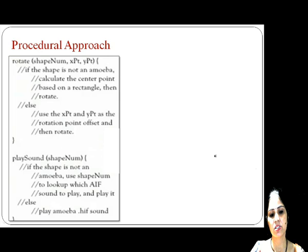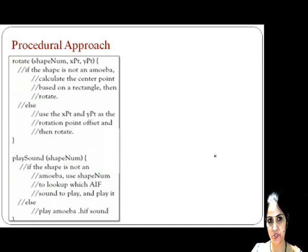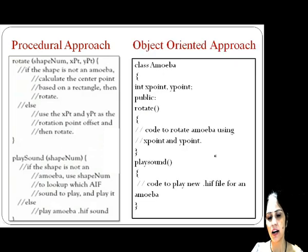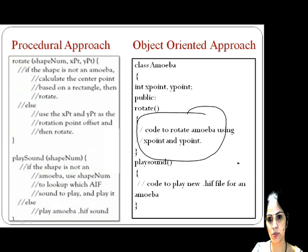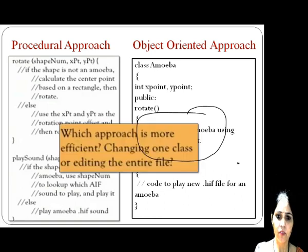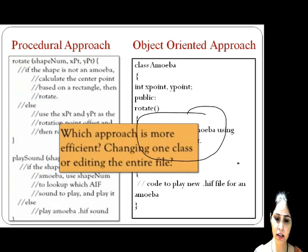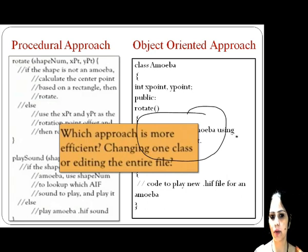In the procedural approach, Samir had to change the rotate function as well — just as he had previously changed the play sound function. That means the whole program is changed. Whereas Tanya only had to change the amoeba class; specifically, the rotate function implemented in the amoeba class needed to be changed. Which approach is more efficient — changing one class or editing the entire file? Obviously, changing one class is much easier than the procedural approach.